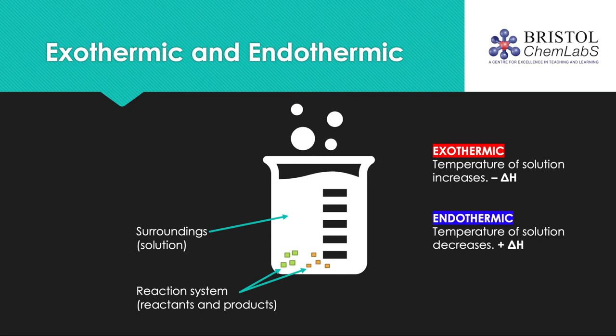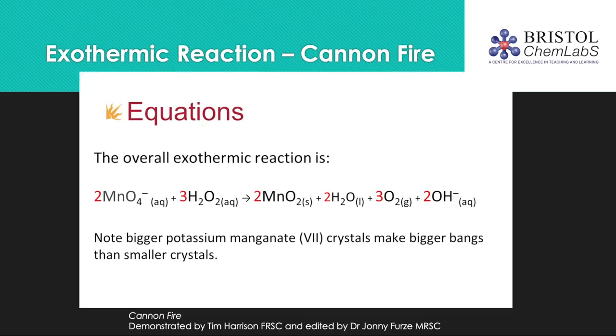The opposite would be true if the reaction were endothermic. The system would be increasing in energy — a positive energy change — and the surroundings decreasing in energy, and thus the solution feels colder. This cannon fire demonstration by Tim Harrison and Johnny Furze is an excellent example of a highly exothermic reaction between hydrogen peroxide and potassium manganate. Hydrogen peroxide and ethanol are mixed together in a heatproof dish, and this is lit to provide the activation energy for the reaction. The potassium manganate crystals are then added to the mixture.